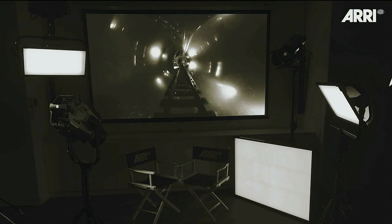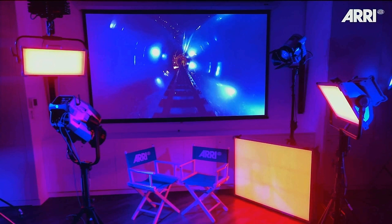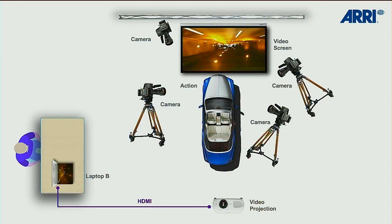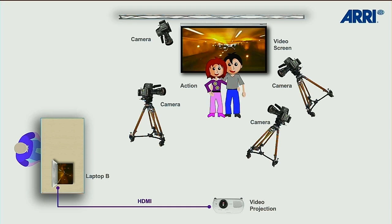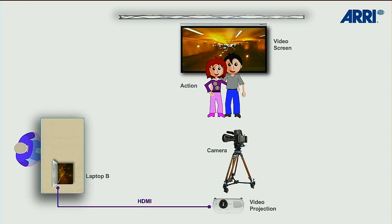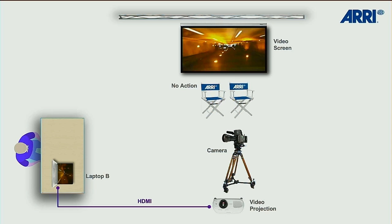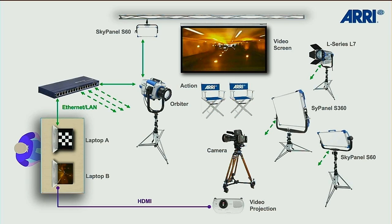Now I will give you an overview about the components we use here in our little shooting set — how everything is set up and how the elements work together. First thing you need is a background, and in front of that you have the action, like a car, a bike or actors. We use a collection of ARRI L-Series, SkyPanel and Orbiter for our lighting. I use one laptop to feed the projector and one laptop to control the lights, which are connected via Ethernet.